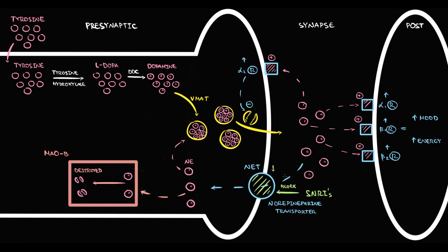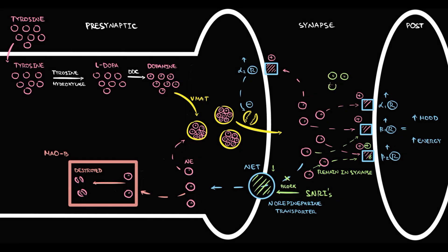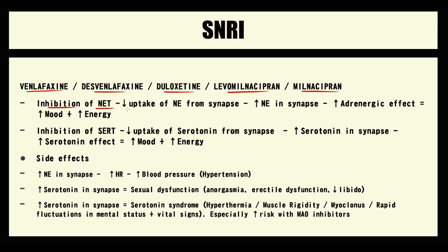Serotonin-norepinephrine reuptake inhibitors inhibit the function of the NET transporter. With inhibition of NET, the reuptake of norepinephrine into the presynaptic neuron decreases, so more norepinephrine molecules remain in the synapse, where they begin to bind to adrenergic receptors, additionally stimulating them. Because the norepinephrine transporter is now blocked, even more norepinephrine accumulates in the synapse. The higher the amount of norepinephrine molecules in the synapse, the higher the stimulation of adrenergic receptors, and thereby the better the mood and the more energy increases.